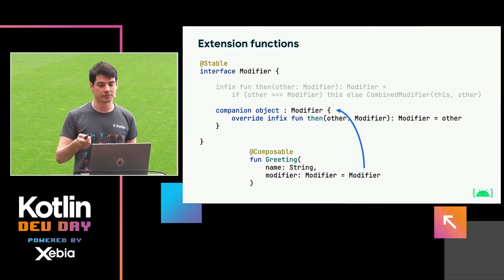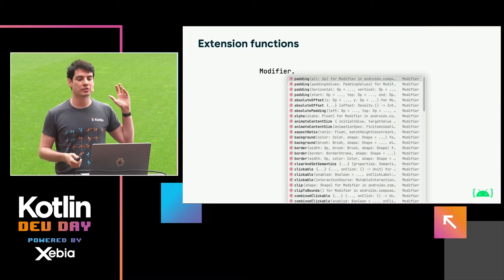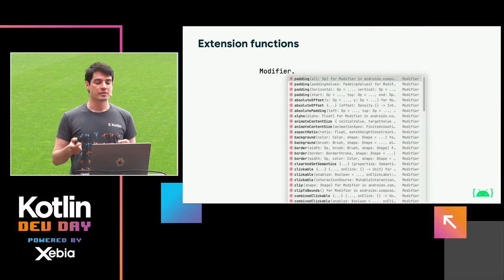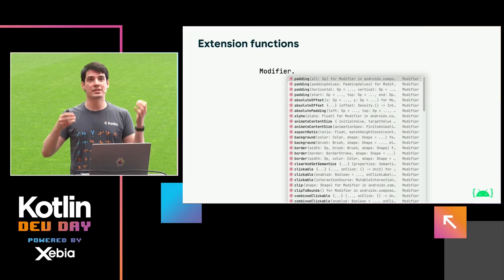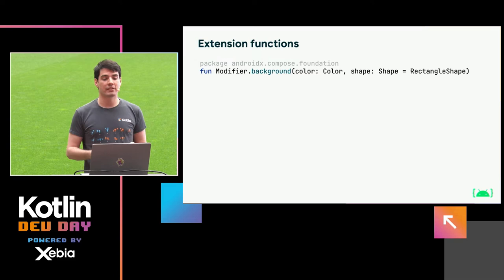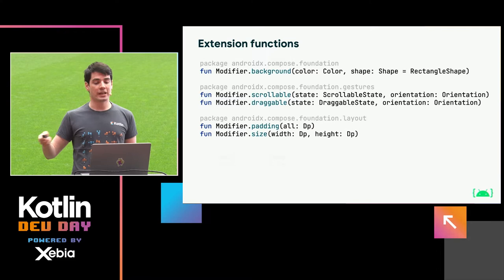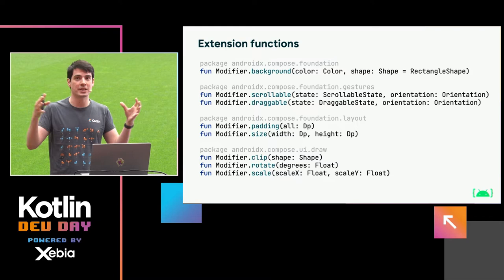We have all of these functions on modifier available, which are not part of the interface. Where do all of these come from? They are all defined as extensions, which means they don't have to reside within the same file — they can even come from different packages and libraries and artifacts in Compose. For example, there's a foundation package that gives you a background modifier, a gestures package to make things draggable or scrollable, or a layout package or a draw package.